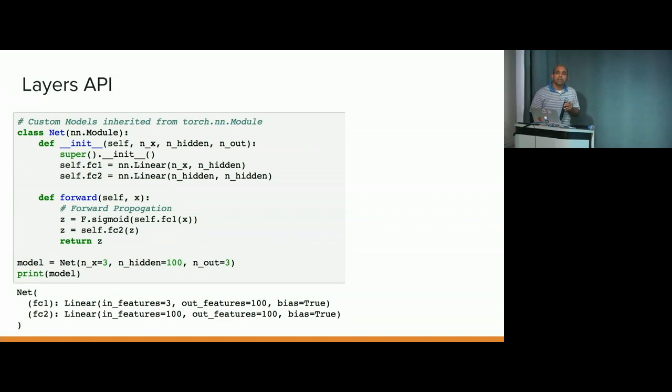Question? Yes. What is the big F dot sigmoid? Oh, F is a functional API. So sigmoid has no parameters. So you only want to store the state of things that have parameters. That's why in the init, I only store the layers that have parameters. But the sigmoid layer, which does not have parameters, you don't need to store it as an instance variable. You can just, it's a functional API. Yeah. Thanks. Yeah. So it has all the activations as this functional API as well. Good question.